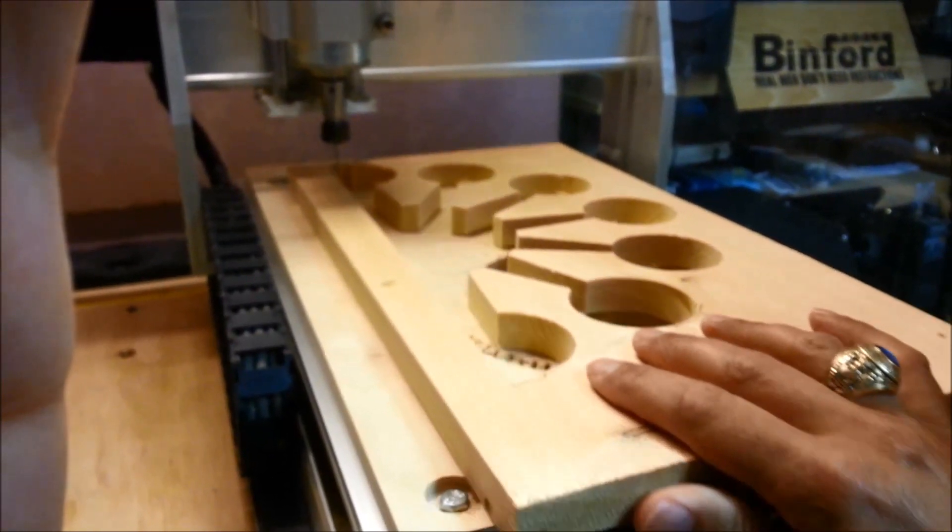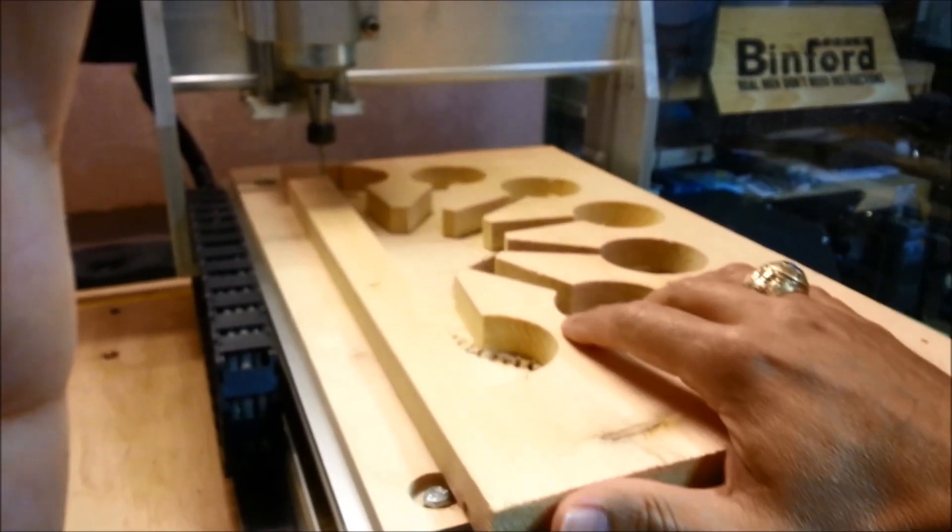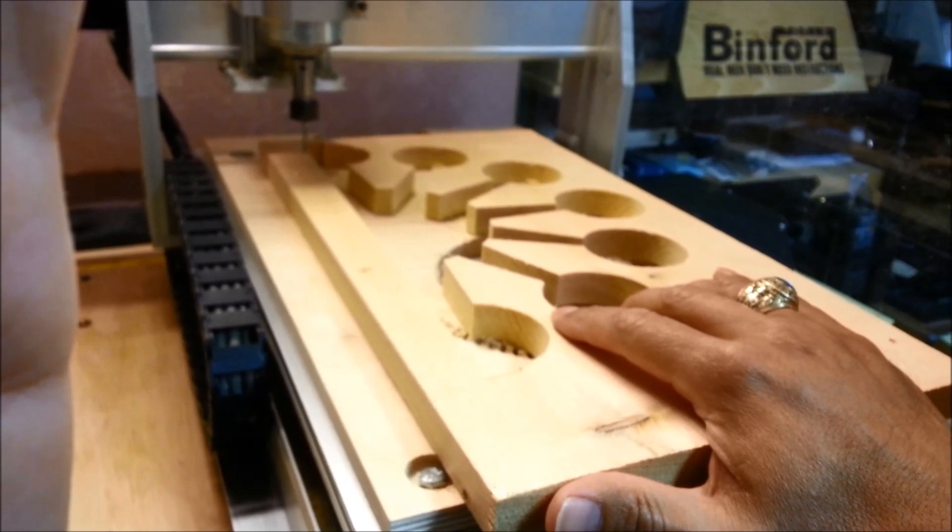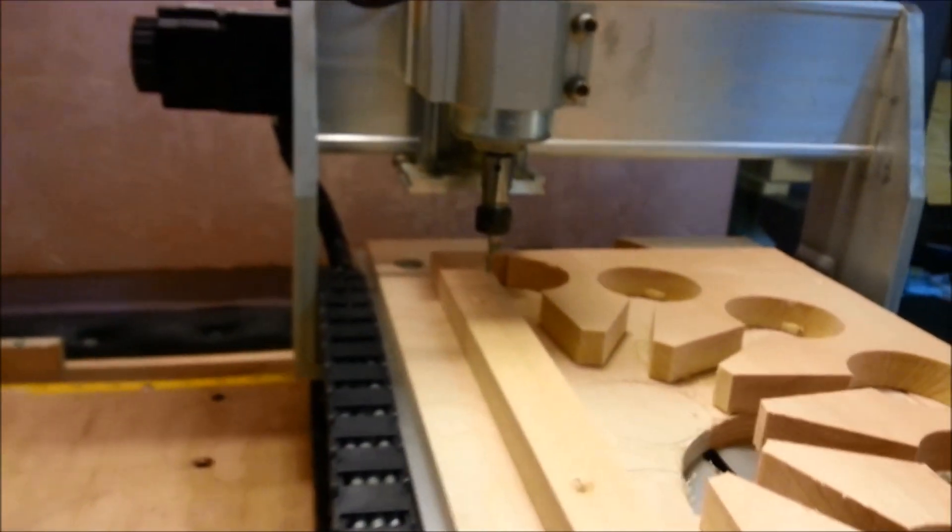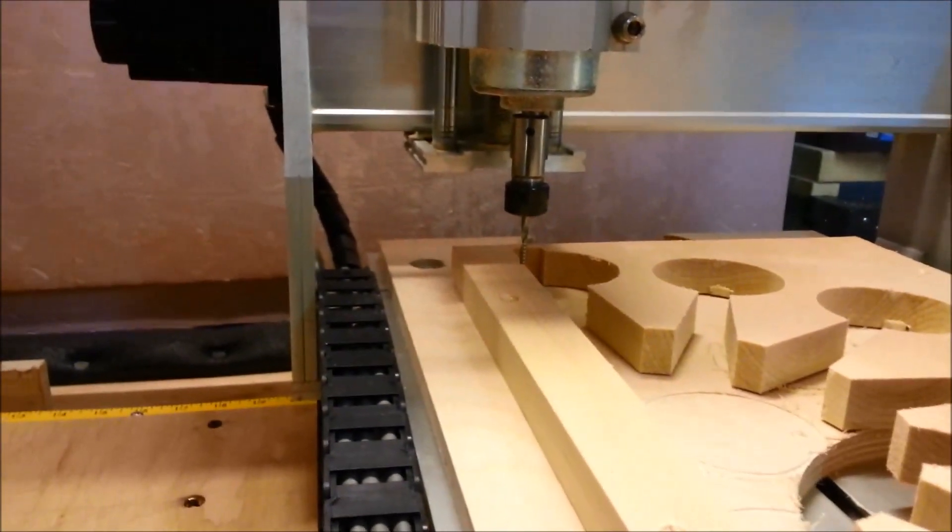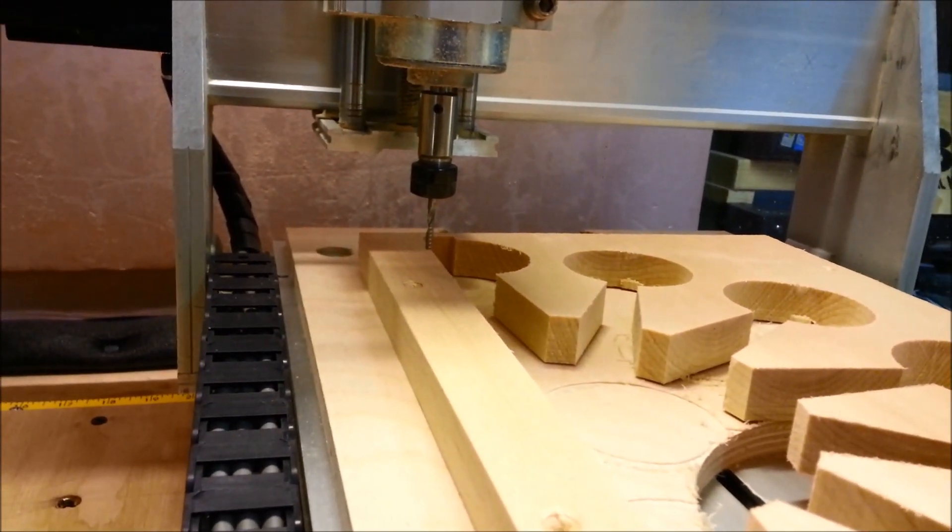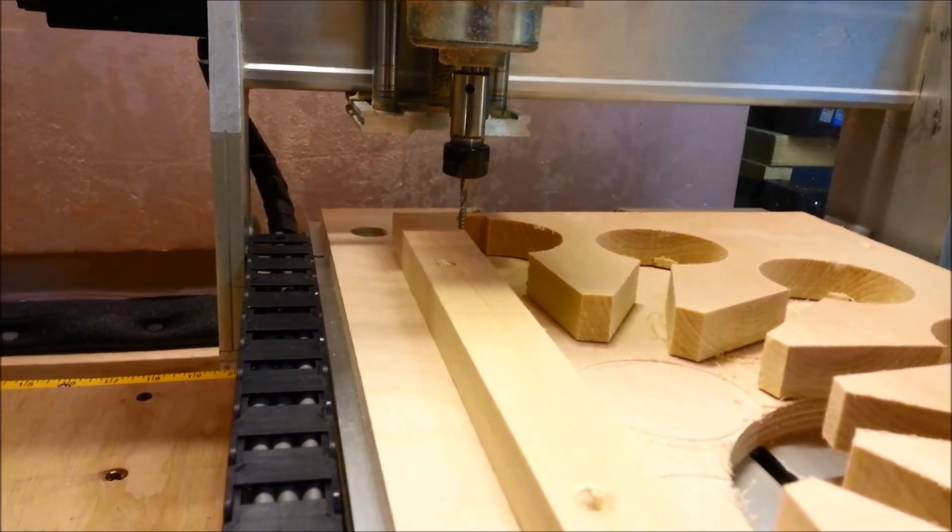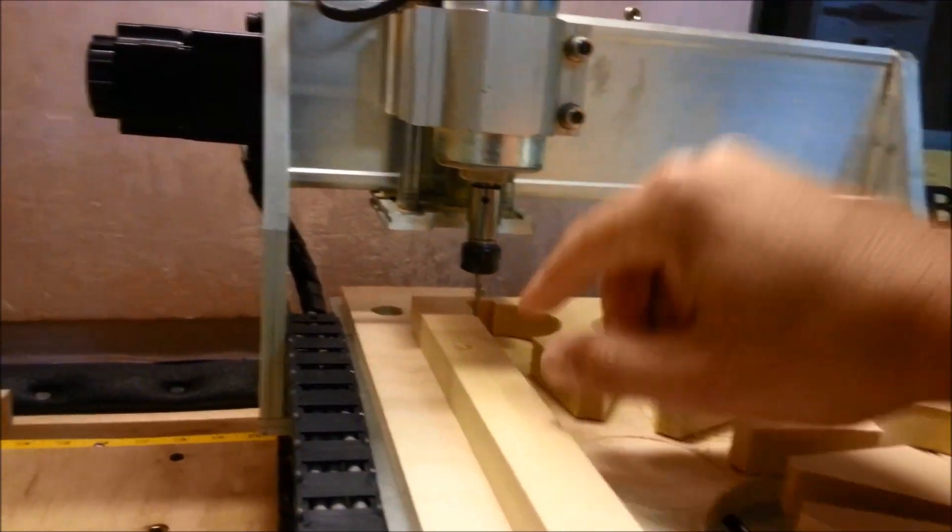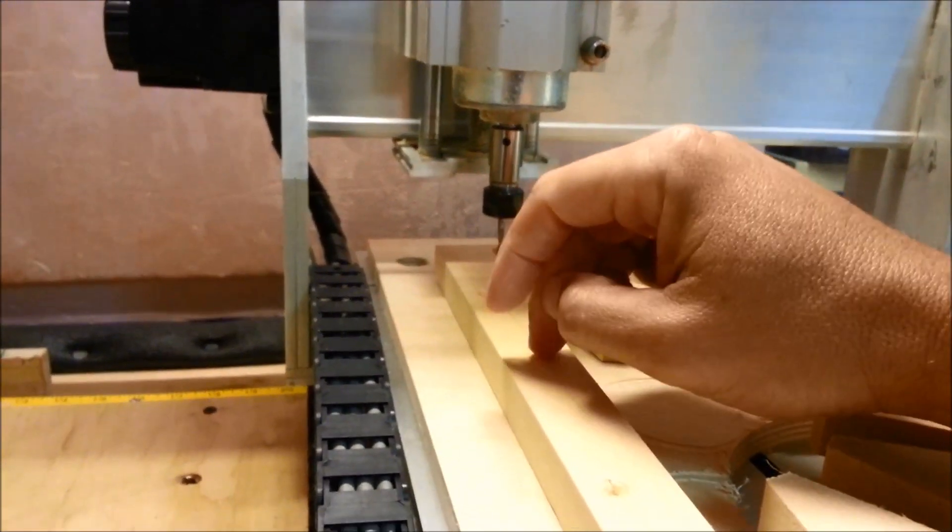But this shows how you can do a much larger project with a very small CNC. The end mills are 1/8 inch end mills that were ordered on eBay. Very cheap. A pack of 10 was about $10.50, and they're just big enough to do a 3/4 inch piece.